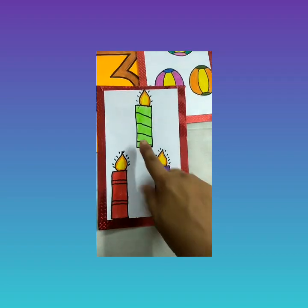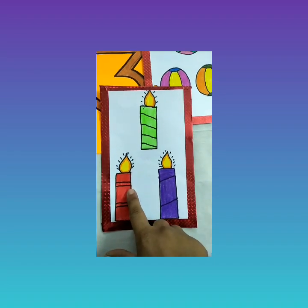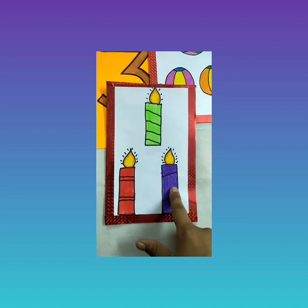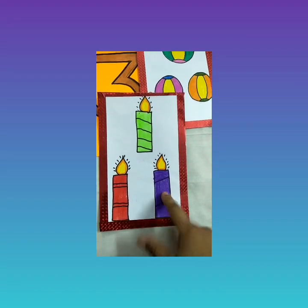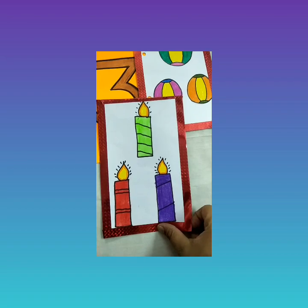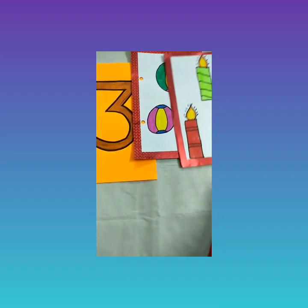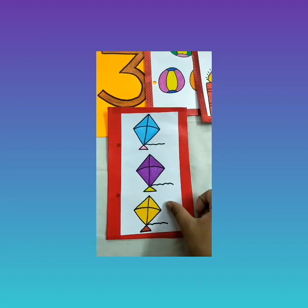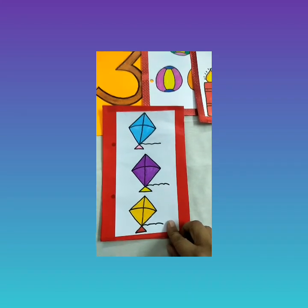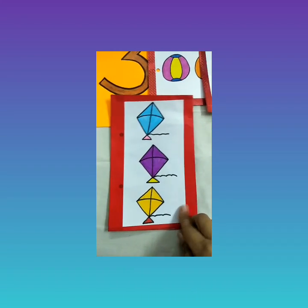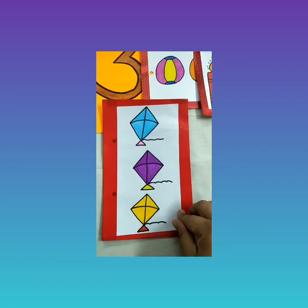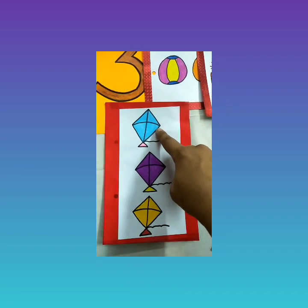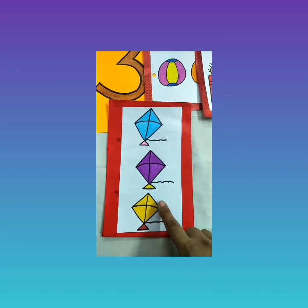Now let us count these beautiful candles. How many candles do I have here? One, two, three — I have three candles, looking beautiful! Have you seen kites flying high up in the sky? How many kites do I have here? One, two, three — I have three kites!